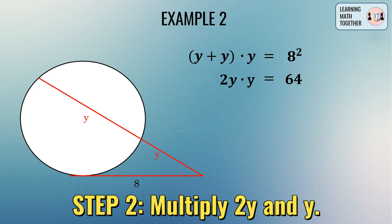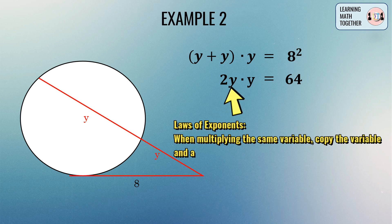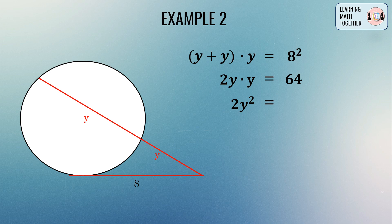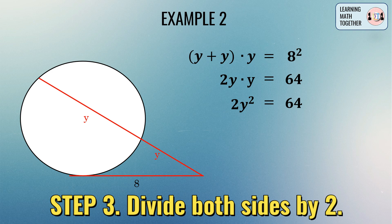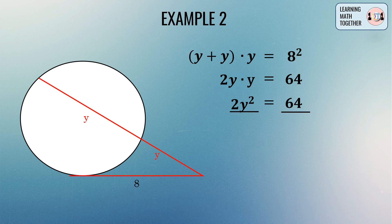Simplifying further: 2y times y equals 2y squared, so 2y squared equals 64. To find y, divide both sides by 2, giving y squared equals 32.